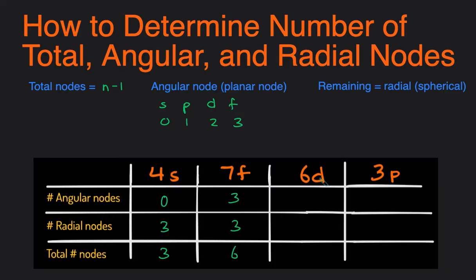And 6D, the total number of nodes would be 6 minus 1, which would be 5. D always has 2 angular nodes, so that means there must be 3 radial nodes.